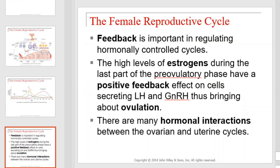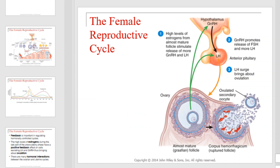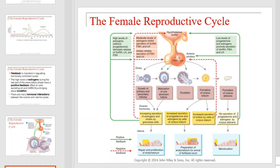Feedback is important in regulating hormonally controlled cycles. The high levels of estrogen during the last part of the pre-ovulatory phase have a positive feedback effect on cells secreting LH and GnRH, thus bringing about ovulation. There are many hormonal interactions between the ovarian and uterine cycles. This graph illustrates the connections that lead up to the changes seen through the menstrual cycle. This concludes our coverage of the male and female reproductive systems.